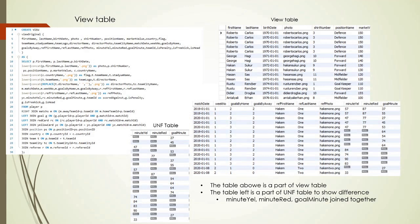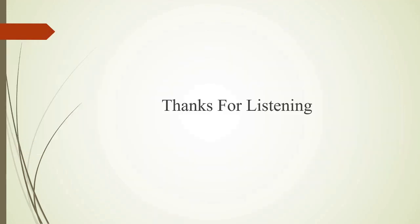We can see the generated view table and a portion of the UNF table for comparison. When we look at our view table, there are 15 rows, but in the UNF table there were 19 rows. This is because yellow card, red card, and goal information are collected into a single row for the same instance. Thanks for listening.